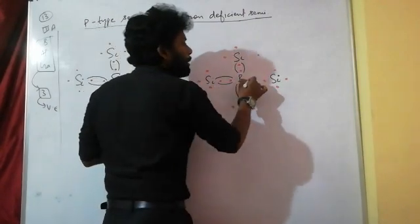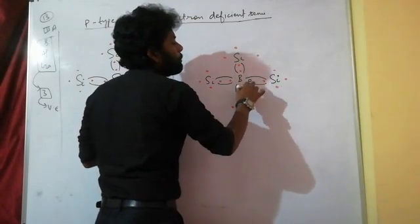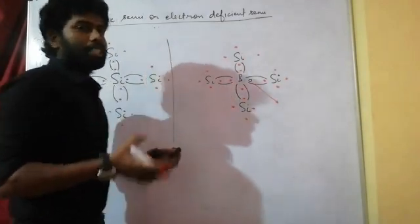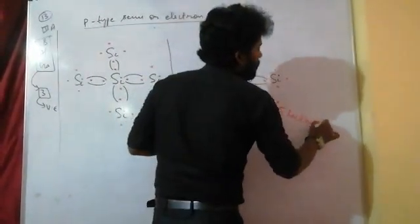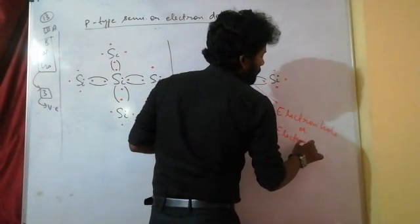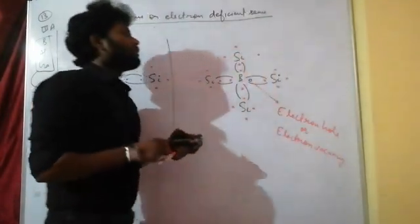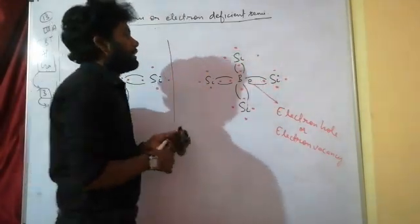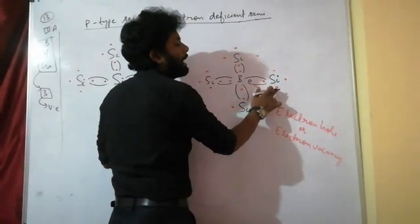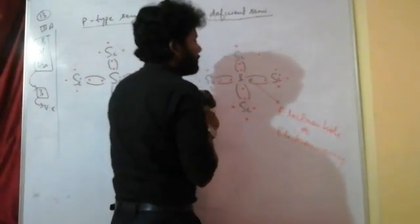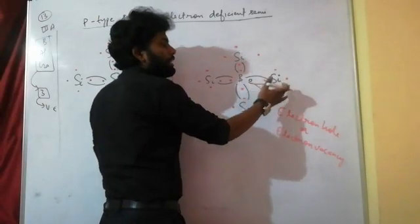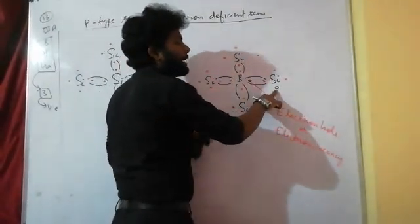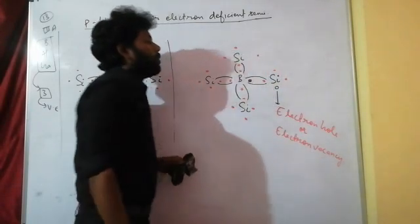This missing position is a hole. This missing electron position is known as an electron hole, also called an electron vacancy.